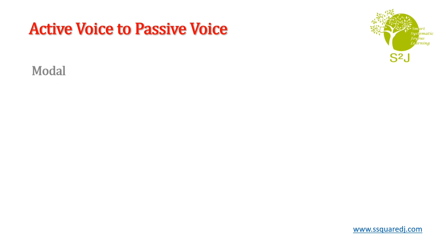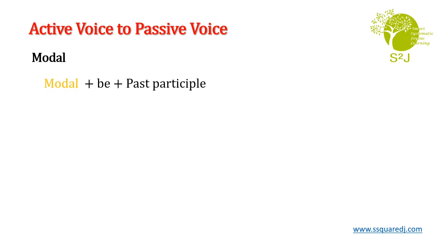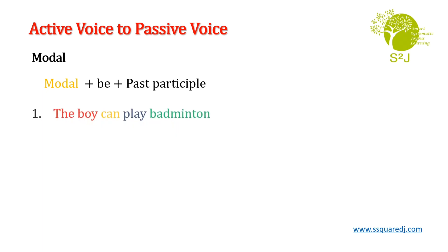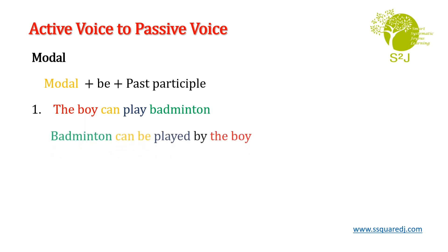Now let us understand how modals are changed. While changing active to passive voice, if we have a modal in the sentence, it becomes: modal + be + past participle. First example: 'The boy can play badminton.' Here, the modal is 'can' and 'play' is your verb. So the sentence will change as: 'Badminton can be played by the boy.'